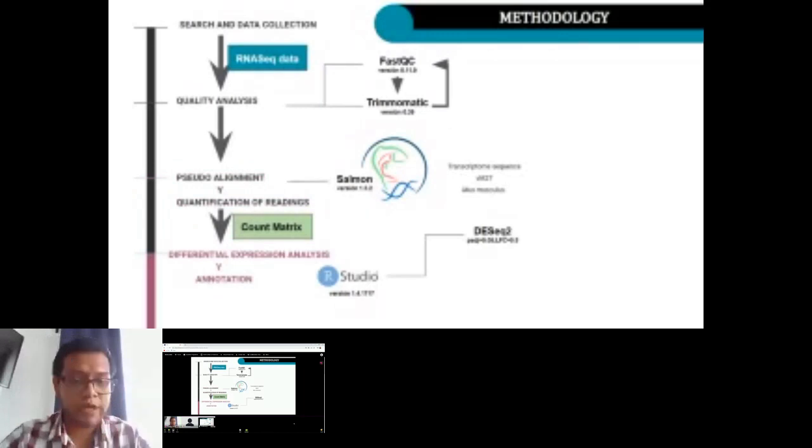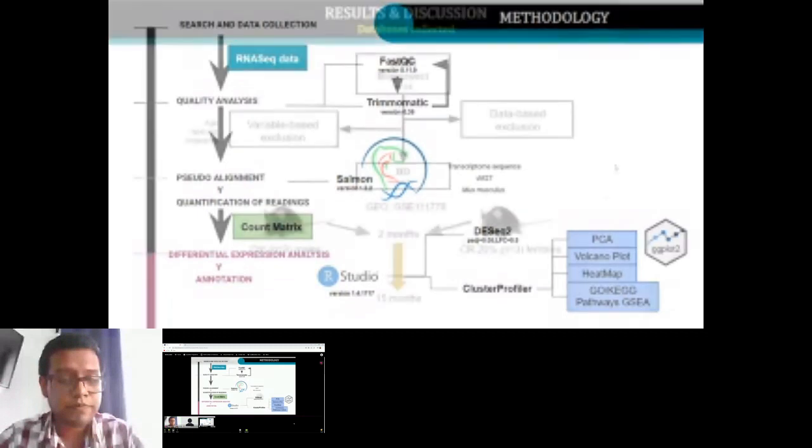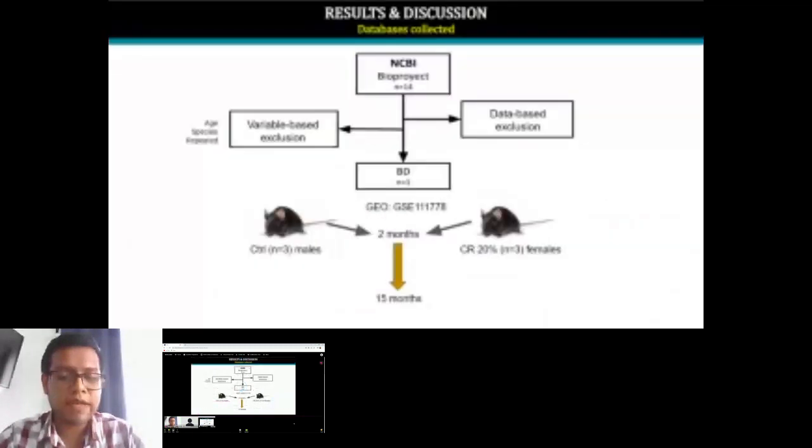We analyzed and trimmed, performed alignment with the mouse skeletal genome, and conducted an expression count matrix. Then we did a differential expression between the conditions and annotated the genes with the aim to know which genes were there and what their function was.